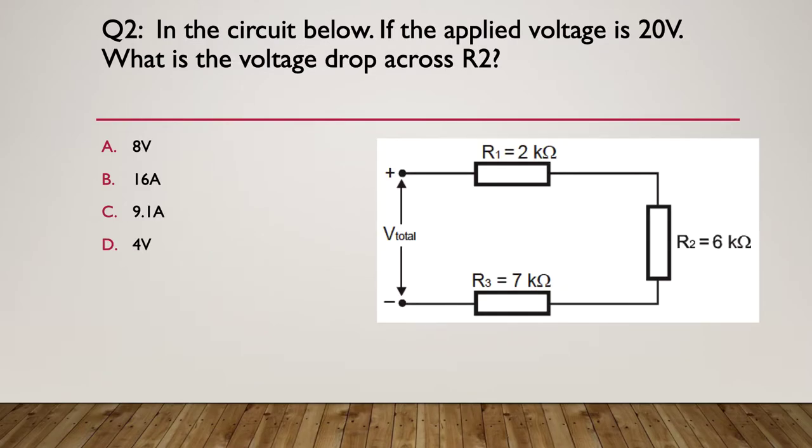Question two: in the circuit below, if the applied voltage is 20 volts, what is the voltage drop across R2, R2 being 6K? So we've got 2K in series with 6K and 7K in series. So what is the voltage drop across R2 if the total voltage applied is 20 volts? Here's your hint: it's Ohm's law and maybe you need to calculate the current first.